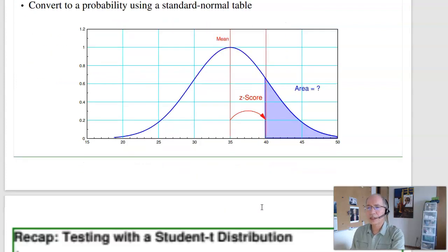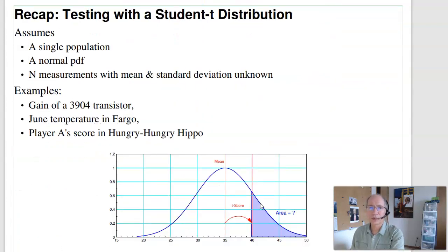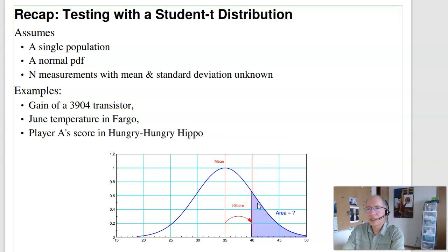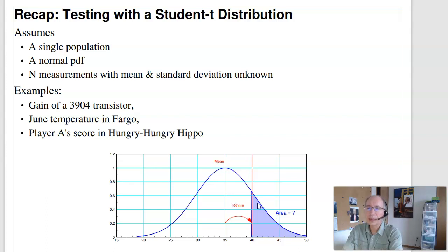That's if you know the mean and standard deviation. A student t-test is very similar, but instead of using the known mean and standard deviation, I estimate them based upon n measurements. It's pretty similar to a normal distribution: I assume a single population, I assume a normal probability density function, just with an unknown mean and unknown standard deviation.